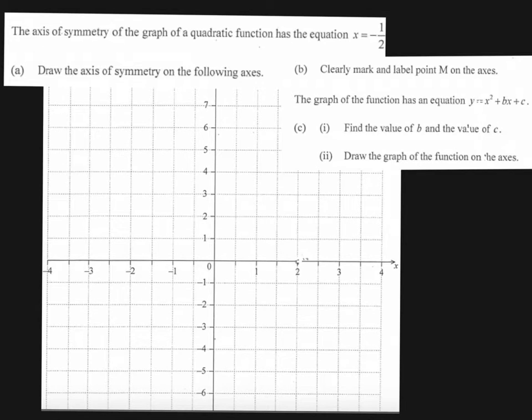Question 14 is all about quadratics. We are told that the axis of symmetry of a quadratic function has the equation x equals negative a half, and we're asked to draw that on the following axis. So x equals negative a half is going to be along this line here, and we can label that x equals negative a half.